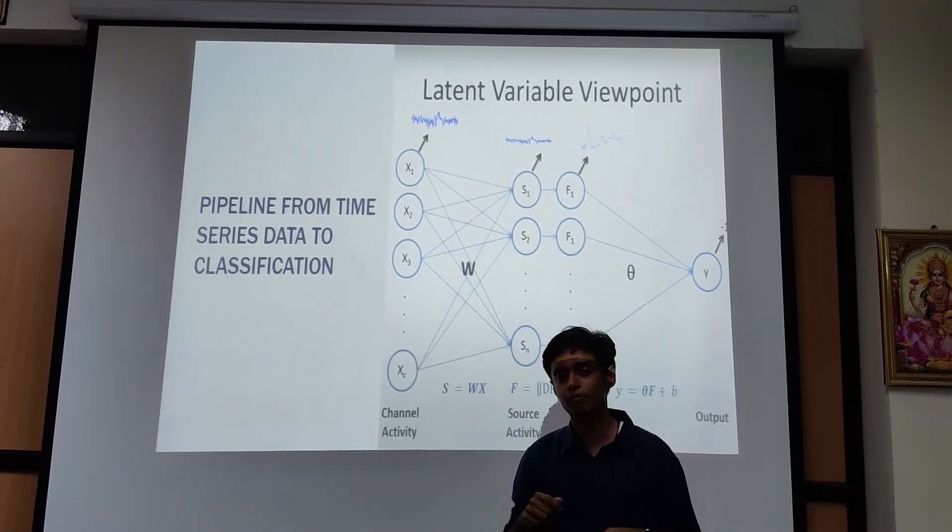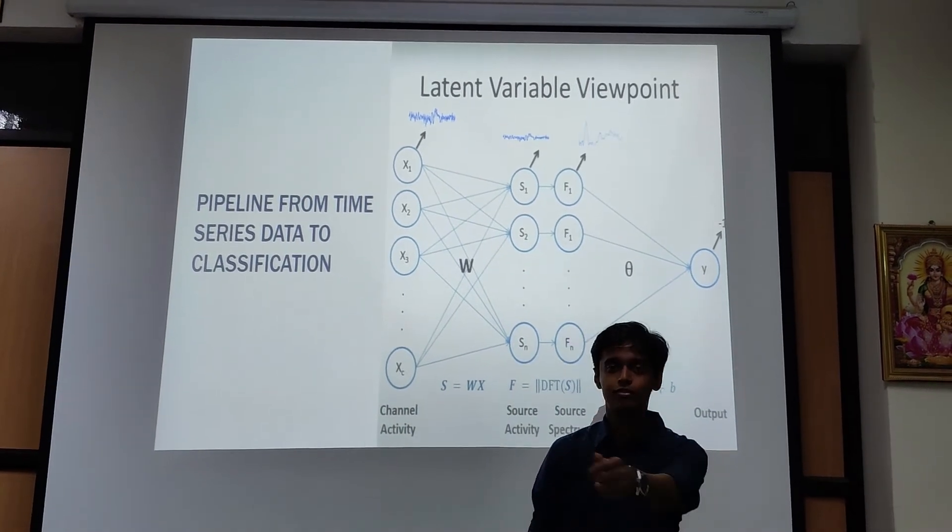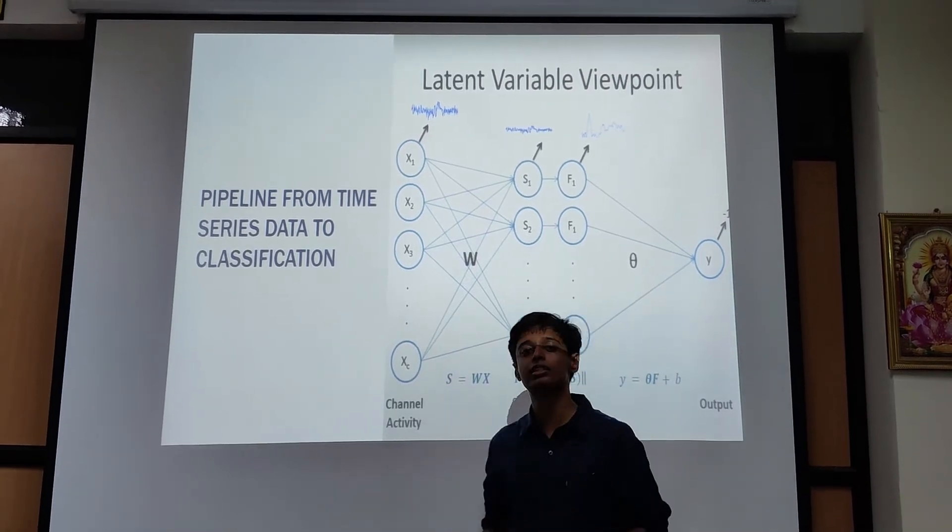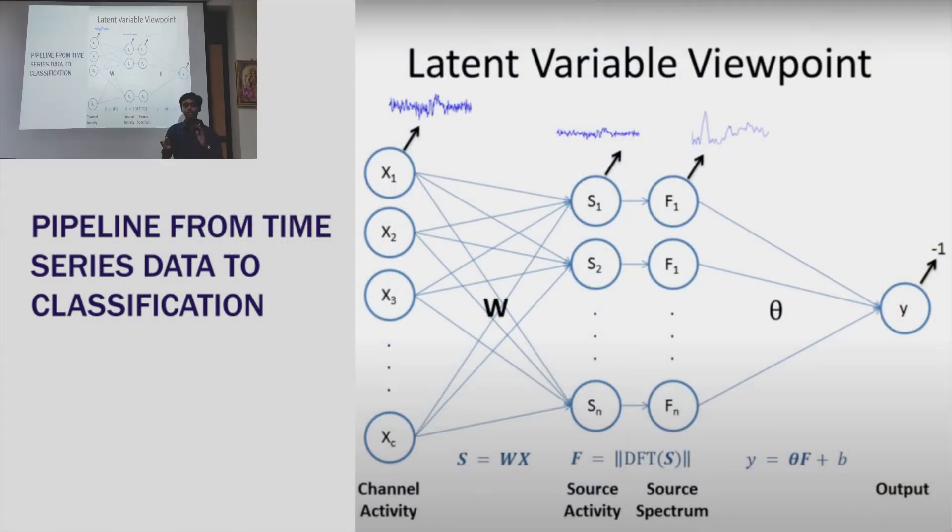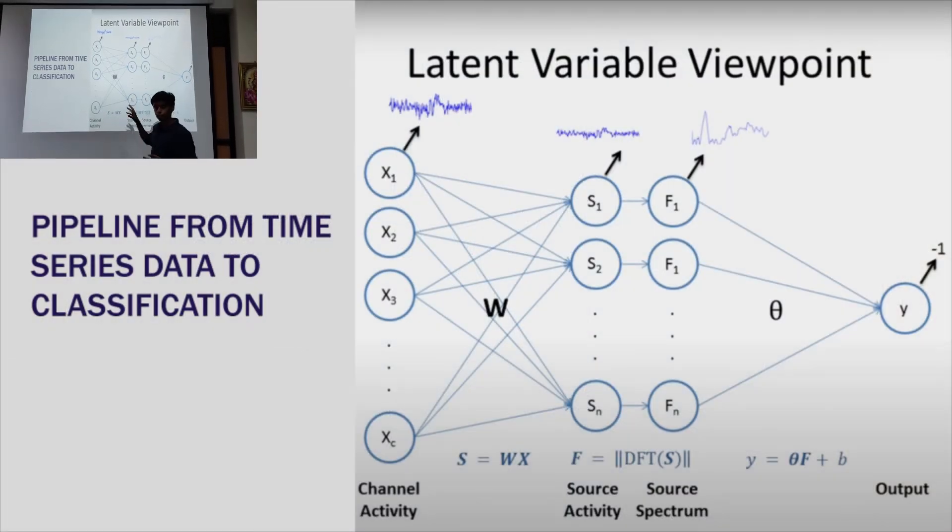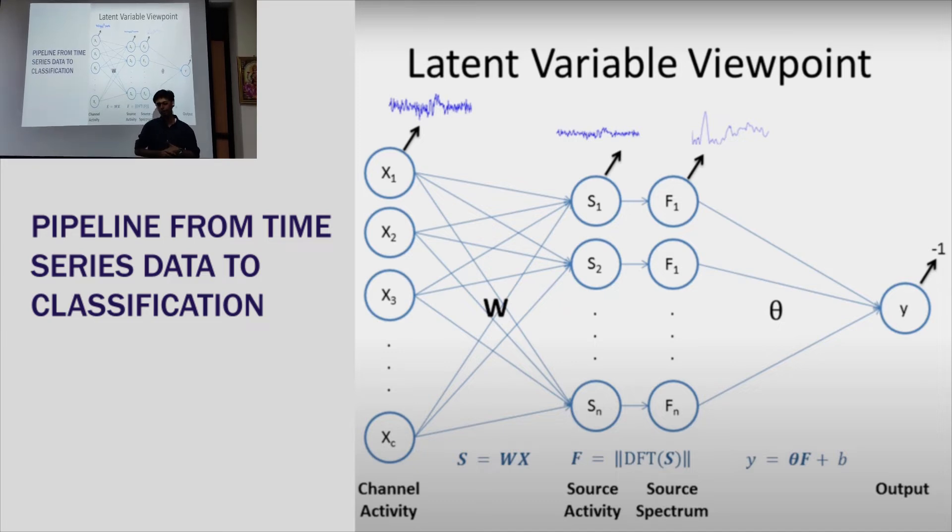But the problem is we can't apply the magnitude DFT directly on the time series channel data because that throws away the phase information. And that phase or rather source information is really important for the classifier to actually distinguish between left hand and right hand imagination. So if we have the non-linearity of the magnitude DFT process on the channel data and throw away all the phase information, you can't train the classifier well enough or in fact at all. So a way to extract that phase or source information is using a linear process of spatially filtering data.